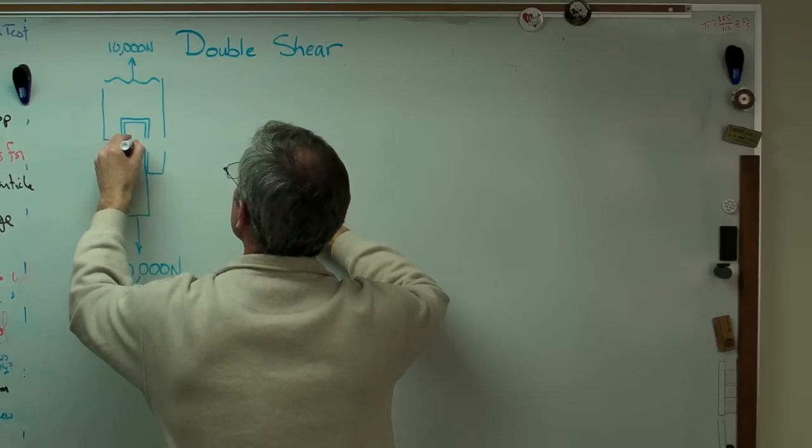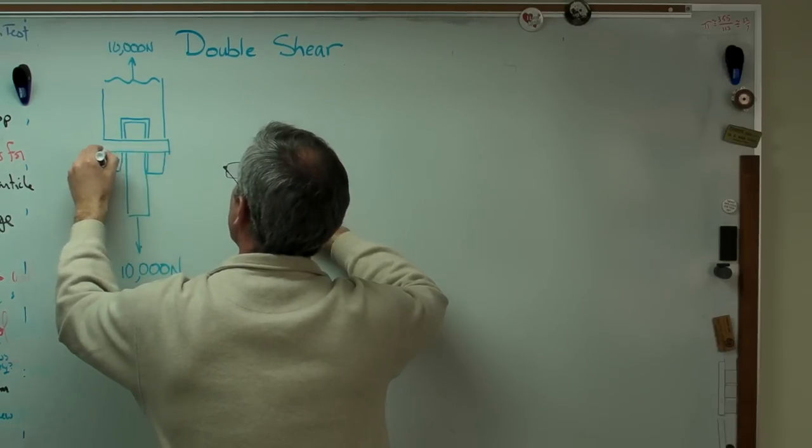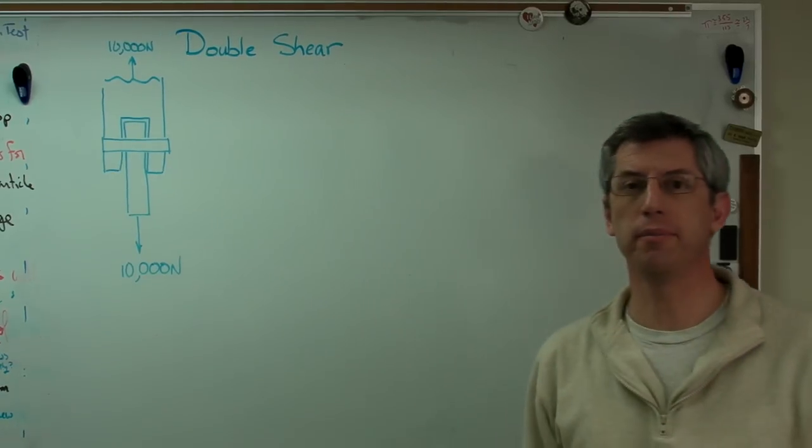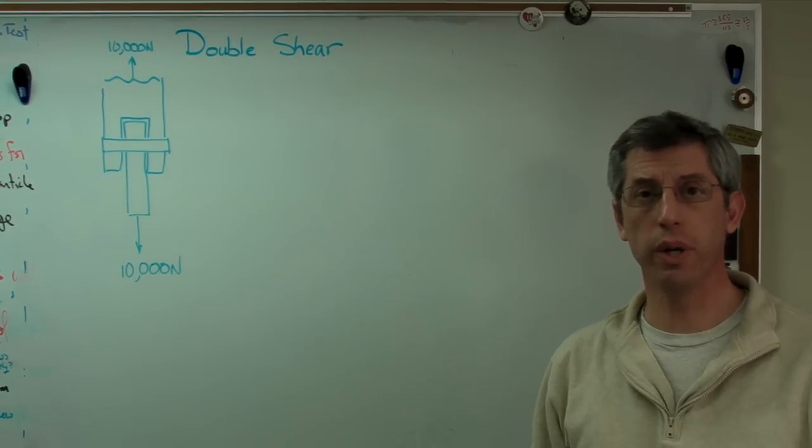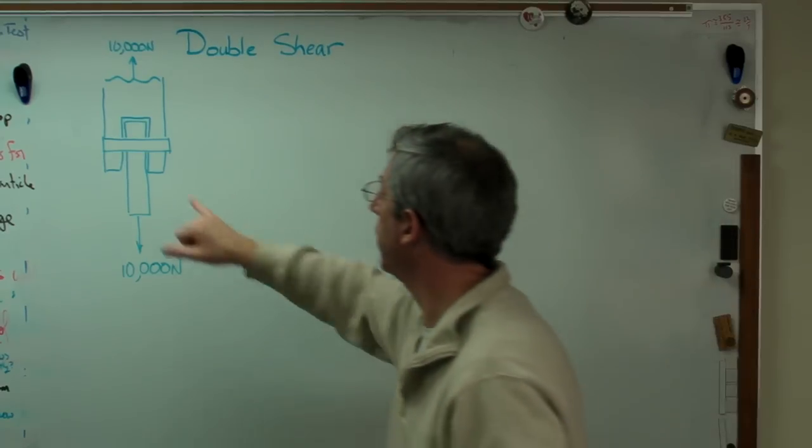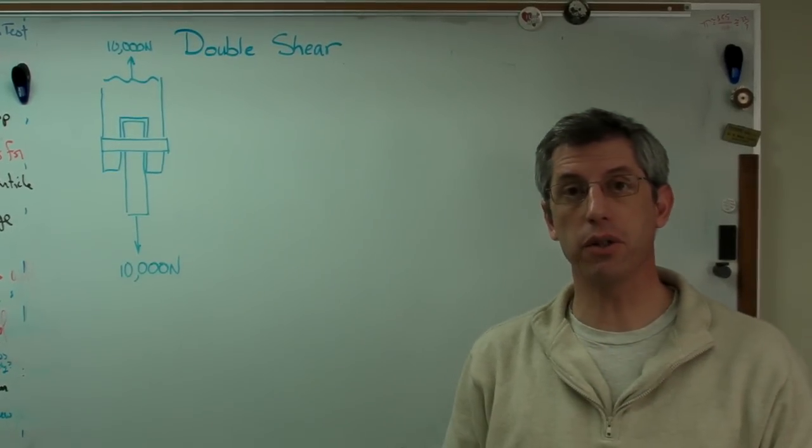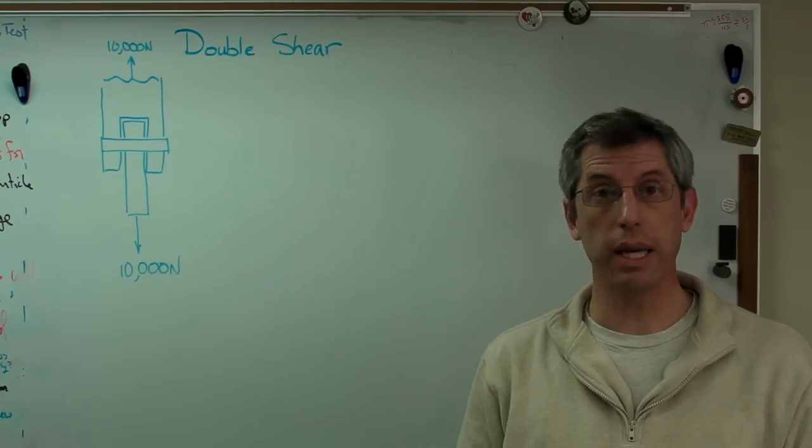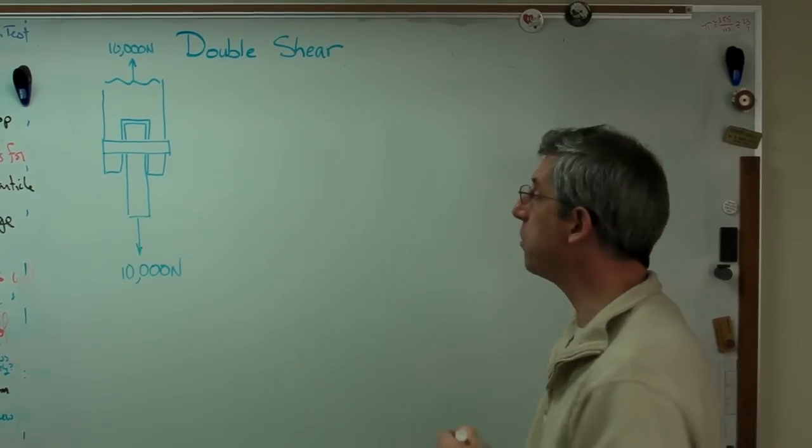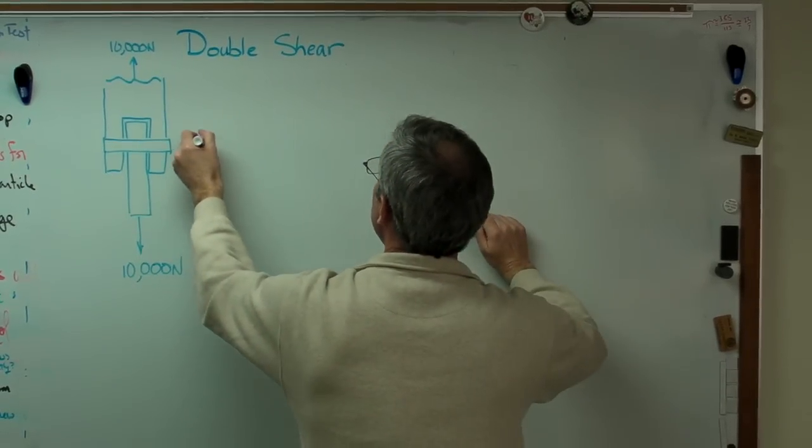And let's put a pin through there. This is a cross section. So there's my pin. Let me assume that's a circular pin. Alright, I have two shear planes just like I had before. One right there and one right there. There's going to be a 5,000 newton force acting across each of those shear planes. So let's draw the free body diagram of just the pin.